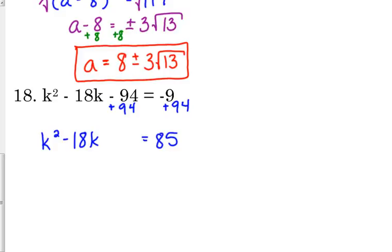Now we're going to complete the square on the left side. 18 divided by 2 is 9. 9 squared is 81. Add that to both sides. That's where most people mess up. They forget to add it to the other side.